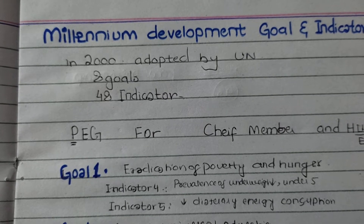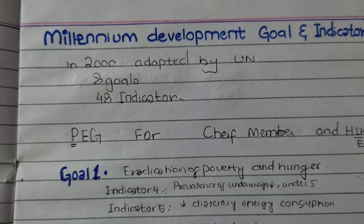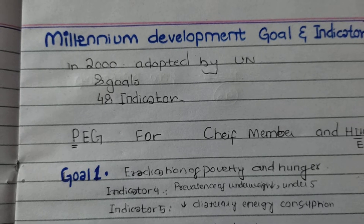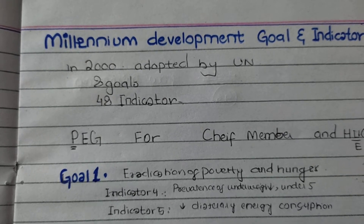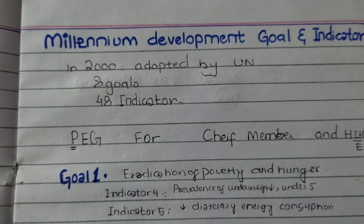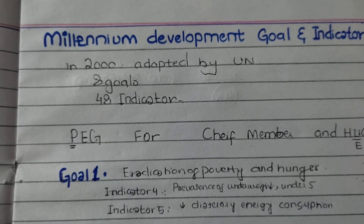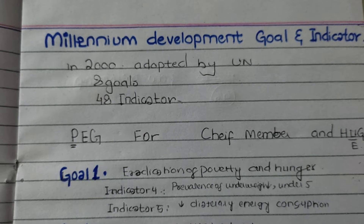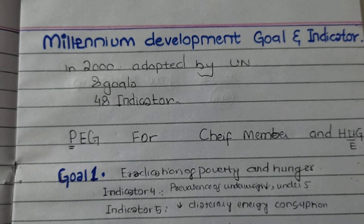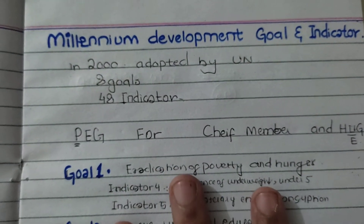Assalamu alaykum everyone. In this video we are going to cover MDGs — Millennium Development Goals. This was adopted in 2000 by the United Nations, and we have 8 goals and 48 indicators. This goal was to be achieved until 2015.